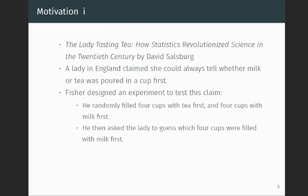And so Fisher was very skeptical, and he designed an experiment to test this claim. So what he did is that he randomly filled four cups with tea first, and then four cups with milk first. And then he asked the lady to guess which four cups were filled with milk first. So she knew that there were exactly four cups that were filled with milk first, and she had to figure out which one of the eight those were.